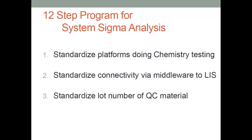The first activity was standardization. We standardized platforms, connectivity, and lot number. We standardized chemistry platforms, making them as similar as possible in terms of parameters and reagent methodology — small, medium, and large labs running pretty much the same analytical system. We standardized the connectivity, which was actually the easiest part. We had the network already in place and put everybody on the same connectivity using a Data Innovations middleware product, guaranteeing standardization across the system.